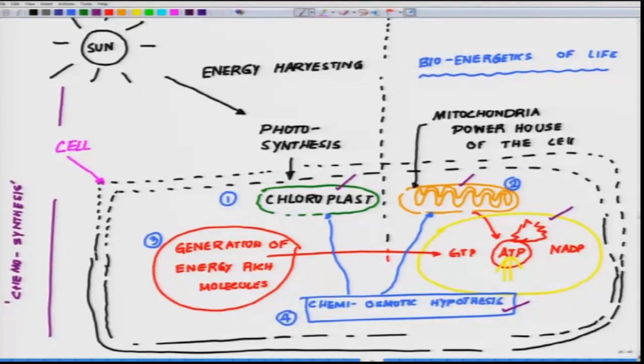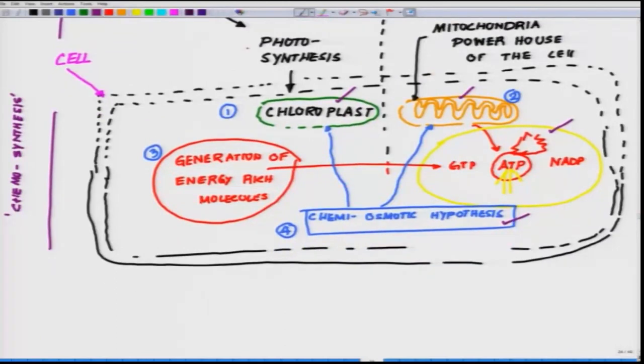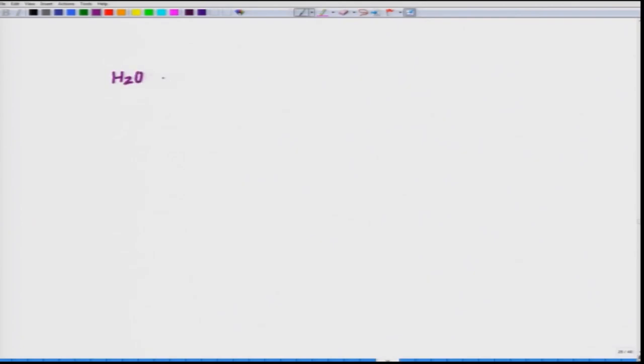To start off with the reaction of photosynthesis: H2O plus CO2, a simple reaction, in the presence of light making CH2O which is the carbohydrate, plus oxygen as the byproduct.